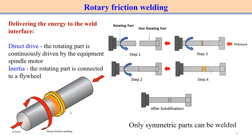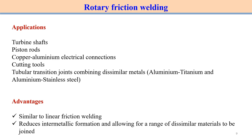Applications of rotary friction welding include turbine shaft piston rods, copper-aluminium electrical connections, cutting tools, tubular transition joints combining dissimilar materials such as aluminium to titanium and aluminium to stainless steel. Advantages are similar to linear friction welding, with the additional benefit of reduced inter-metallic formation, allowing a range of dissimilar metals to be joined. The lower process temperature below the melting point reduces inter-metallic formation compared to fusion welding.